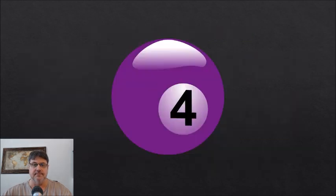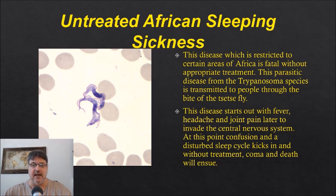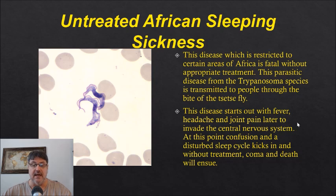Number four: untreated African sleeping sickness. This disease, which is restricted to certain areas of Africa, is fatal without appropriate treatment. This parasitic disease from the Trypanosoma species is transmitted to people through the bite of a tsetse fly. The disease starts out with fever, headache, and joint pain, later invading the central nervous system. At this point, confusion and a disturbed sleep cycle kick in, and without treatment, coma and death will ensue.